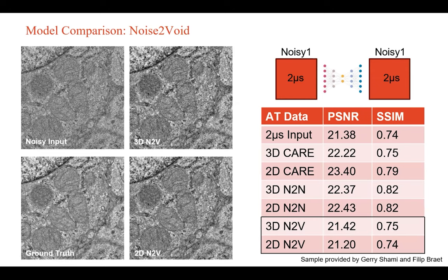Finally, I tried Noise2Void in both 3D and 2D, and unfortunately it didn't work. The output is still noisy for both the 3D and 2D models — not any better than the input — and the metrics back this up. When I showed this to Ben, it was a red flag that we should check the nature of the noise in these images, because as Ben mentioned, Noise2Void would not perform well on correlated noise.